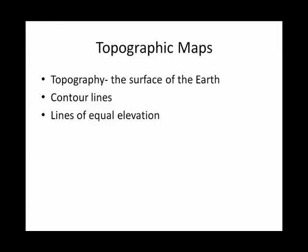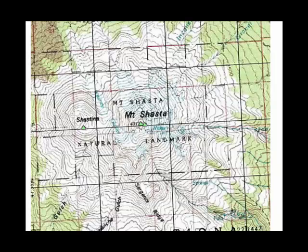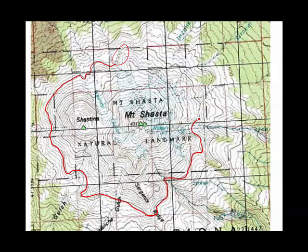When you first look at a topographic map, it might look a little bit confusing. However, let's make sense out of this map of Mount Shasta. Here we have the 3,000 meter mark. If the contour line is a line of equal elevation, I could walk around Mount Shasta sticking to this contour line and I would never go up or down, but maintain the same elevation. When I'm done, I've come back to the same spot.